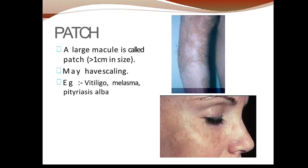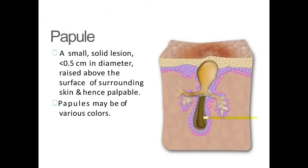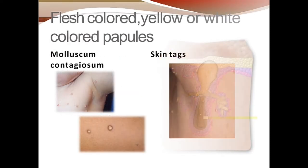Next is papule. A papule is a small, solid lesion with a size less than 0.5 centimeter in diameter, raised above the surface of the surrounding skin, and hence palpable. Papule means a raised area; its diameter is usually less than 0.5 centimeter. It is raised above the skin, so it is palpable — unlike a macule which is flat.